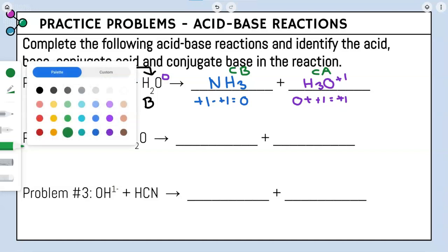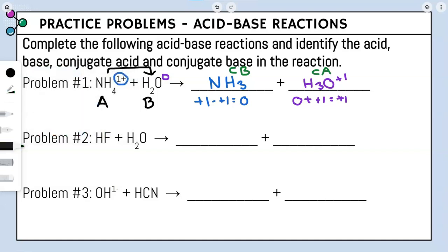Moving on to problem number two, our first step is to figure out which is our acid. We cannot assume water is going to be our acid. Looking at HF — HF is going to be our acid because it starts with a hydrogen. Therefore, water is going to be our base again.